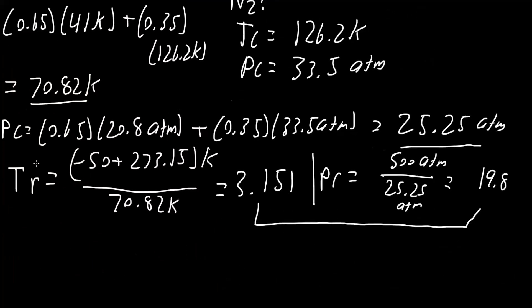Now, using TR and PR value, we will use a compressibility chart. You may be able to find it in the textbook, or you can search the internet. Essentially, we will be finding a point where TR of 3.151 and PR of 19.8 matches to give us a Z value. And in doing so, we get about 1.1.